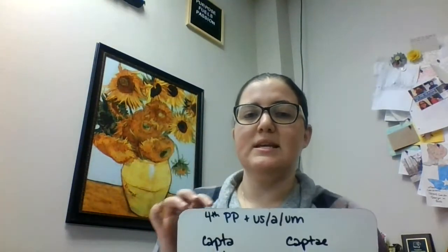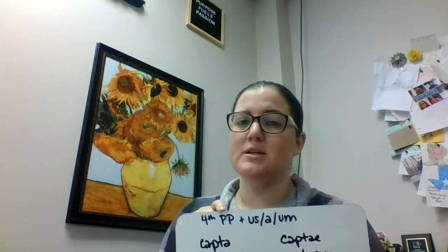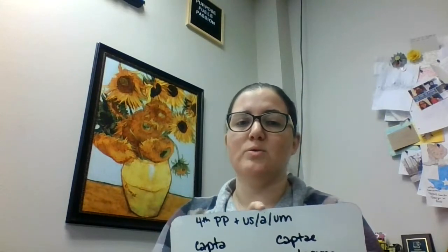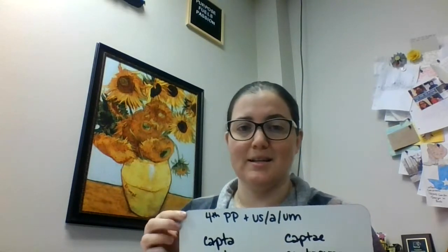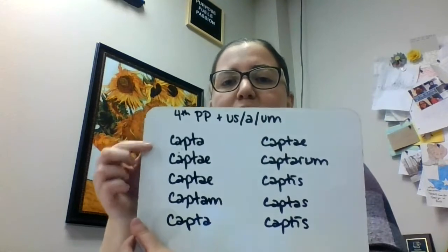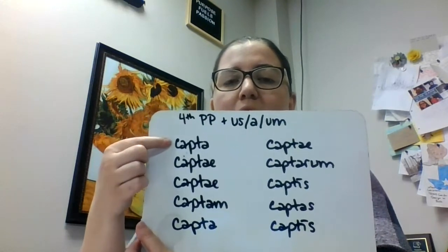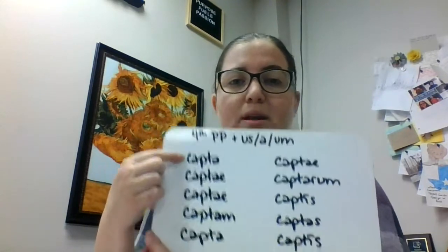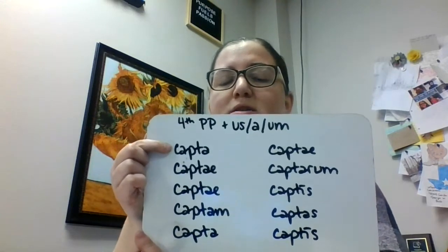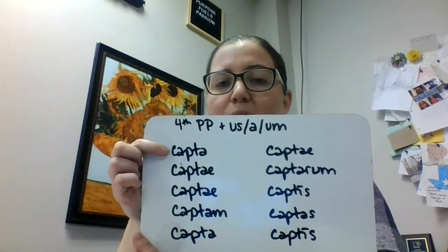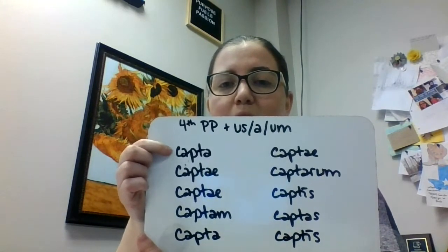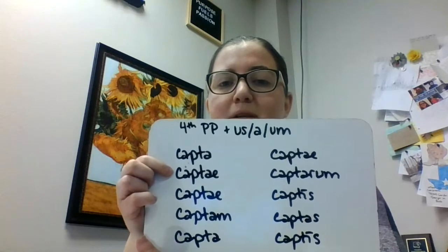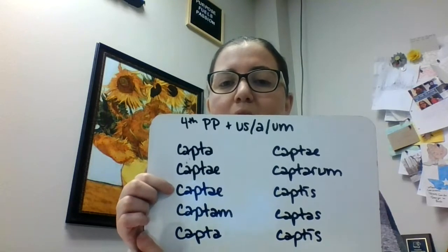Moving on to our next one: the perfect passive participle. This one's an easy one — it's just our fourth principal part, and 'us/a/um', so our first and second declension endings. Here we have 'capta' because this one was feminine. So this is our fourth principal part of capio — captus, capta for feminine — captae, captae, captam, capta, captae.